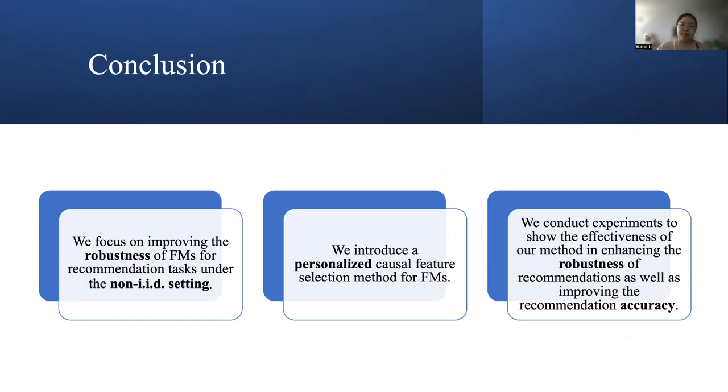Here we conclude our paper. In this work, we focus on improving the robustness of FMs for recommendation tasks under the non-IID setting. The non-IID setting in our paper means the distributional shifts exist between the training and testing sets due to some selection bias. To this end, we introduce a personalized causal feature selection method for FM.